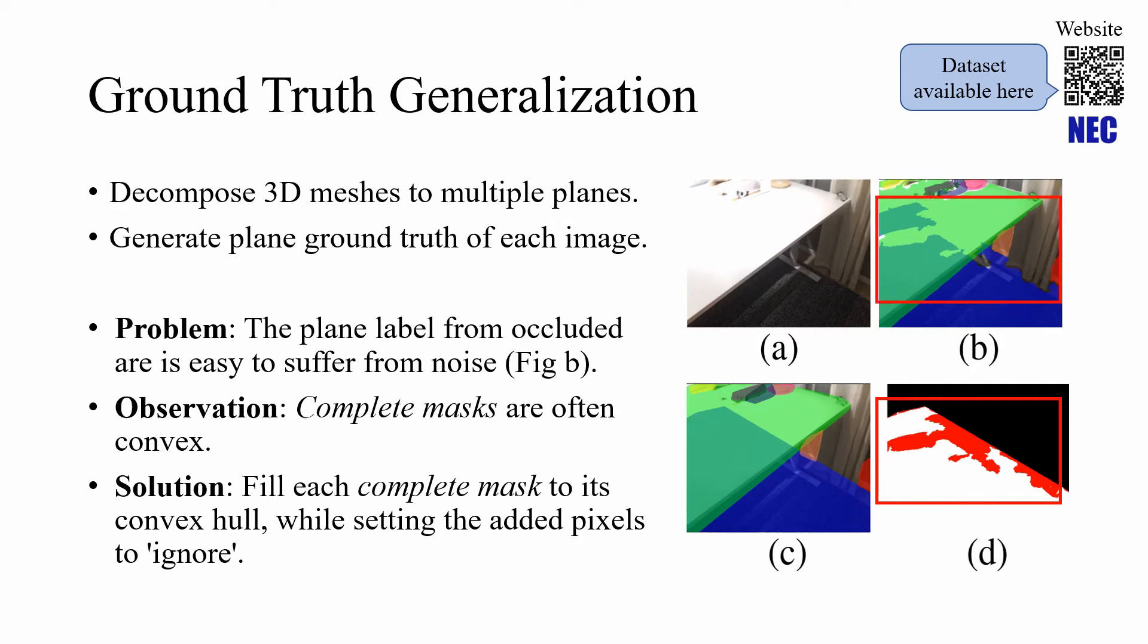To address this, we leverage the observation that complete masks are often convex and fill each complete mask to its convex hull, while setting the added pixels to ignore. Such that an algorithm training on this sample does not incur a loss in those uncertain regions. The ignored area is shown as the red part in figure D.